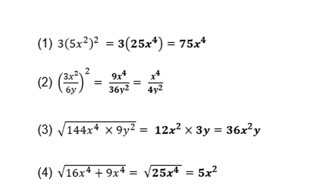But for number 4, be careful: you cannot find the square roots individually. You must first add the two terms, which gives you 25x to the power 4, and then only do you find the square root, which is 5x squared.